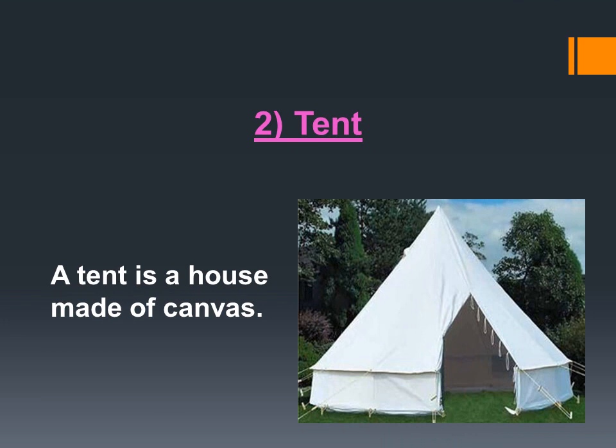The second is a tent. When we go outside to a hill station or on a picnic, people use tents. A tent is a house made of canvas — canvas is a thick fabric or cloth that protects from heat, cold, and rain.